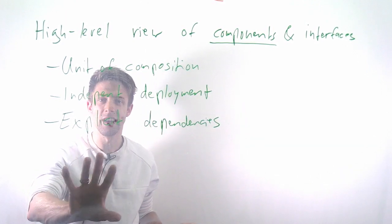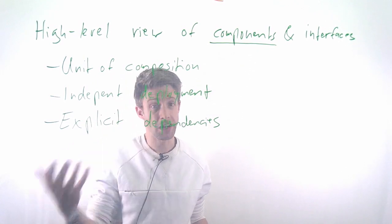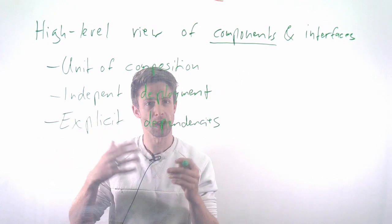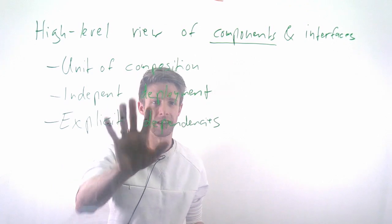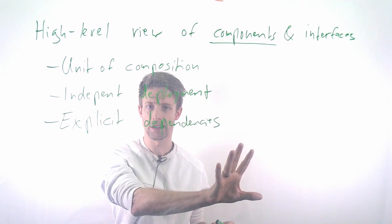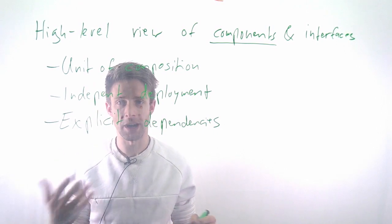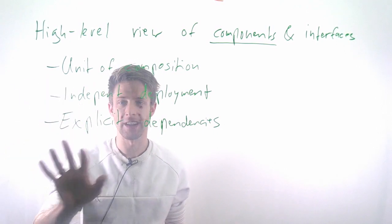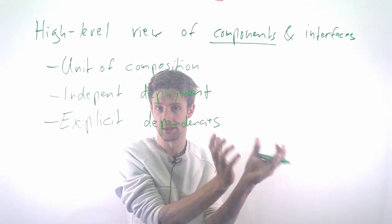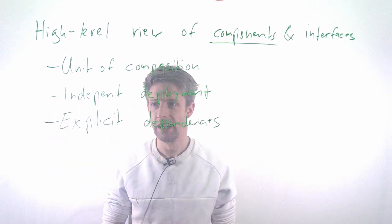A component has explicit dependencies to other components. For example, I have an online shop, one component written in JavaScript that I deploy on the web. It's independent, so I can run it no problem. But for it to work properly, it requires another component which is some kind of payment service. You can shop and put things in your basket, but to actually pay, this component requires explicitly another component that deals with payment, which could be running somewhere else.